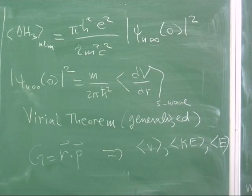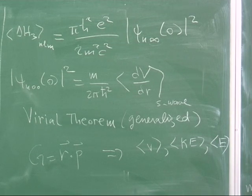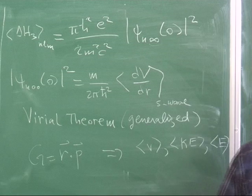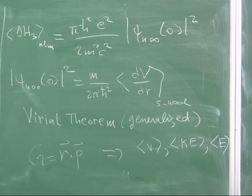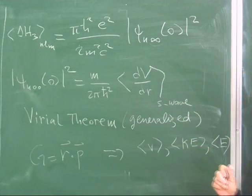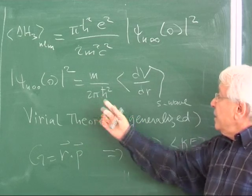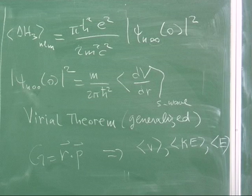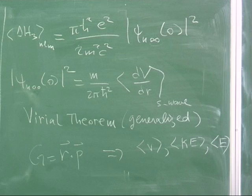This generalized virial theorem is a powerful result applicable beyond hydrogen — it works for any central potential including 1/r², r², or linear potentials. In quark-antiquark (quarkonia) physics, combinations of all these radial terms appear, and this theorem gives the wave function at the origin through a simple expectation value, which is essential for computing mass spectra.